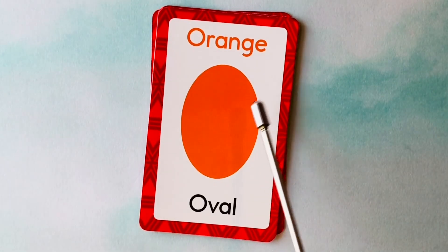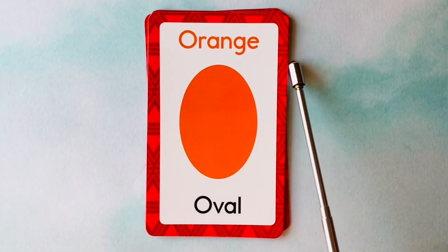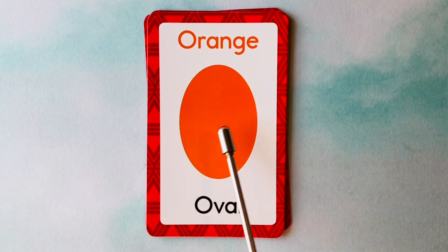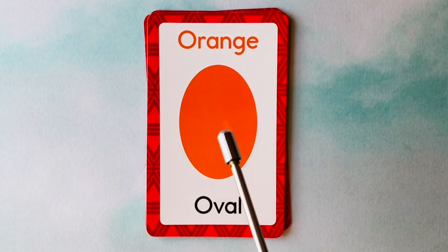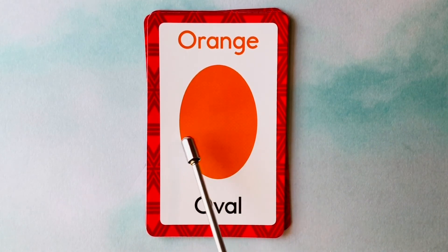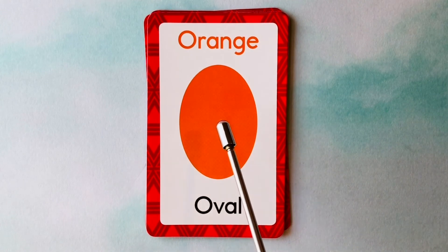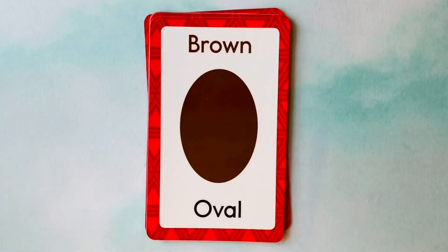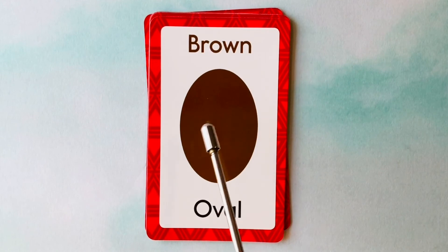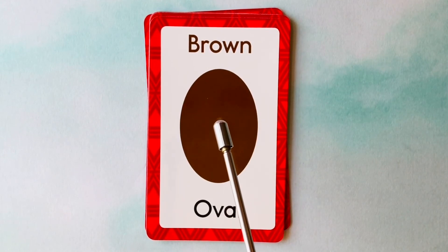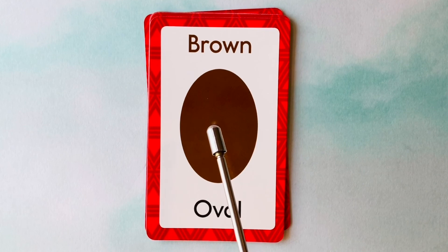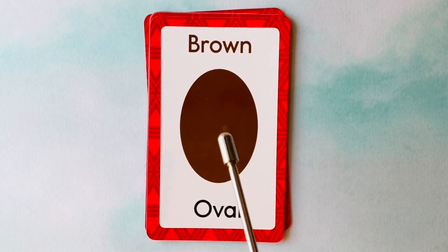This is an oval. What color is this oval? It's an orange oval. This is also an oval. What color is this oval? It's a brown oval.